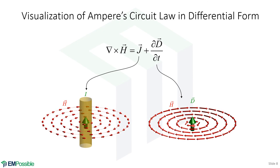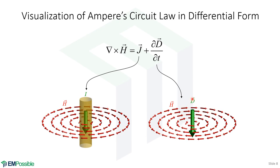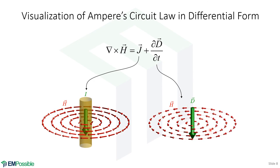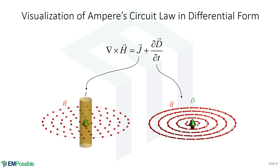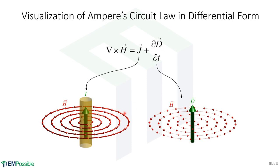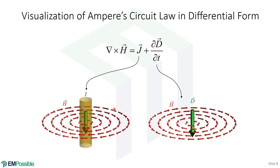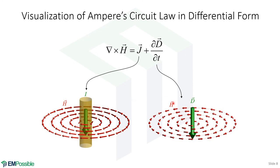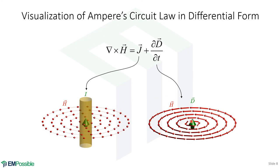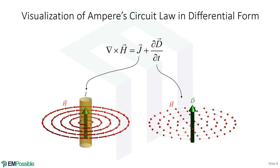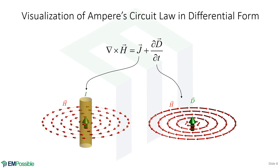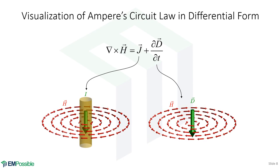However, we can also have a time-changing electric flux, and we'll see that we also get a magnetic field oscillating around that. Now, these two are behaving a little bit different. A steady current will give us a steady magnetic field. However, a steady electric flux will not give us any magnetic field. This magnetic flux has to be changing with respect to time.